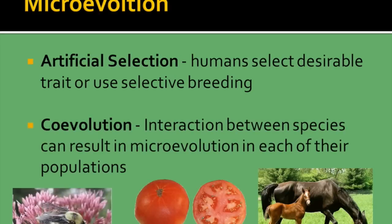Coevolution is the interaction between species, and this can result in microevolution in each of their populations. For example, if the owl evolves so they can hunt mice better, then the mice are also going to evolve — those that can get away are the ones that survive, and those traits get passed on rather than the traits of the mice that get captured.